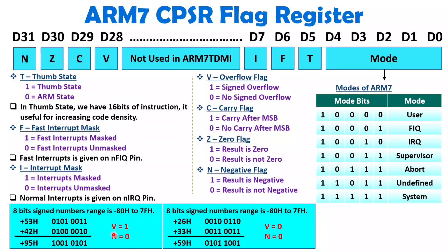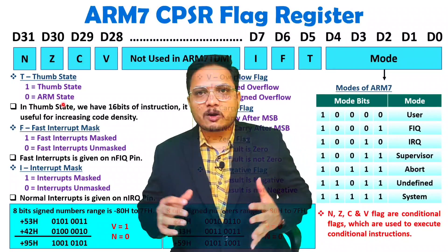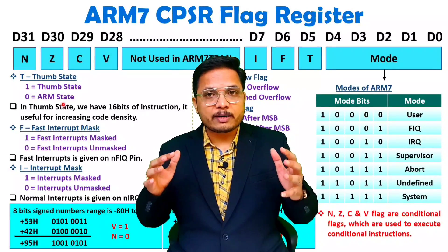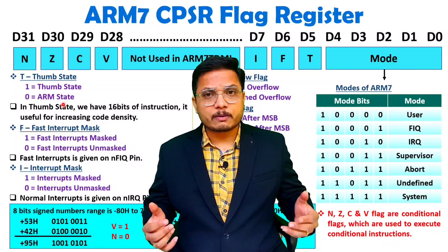By using the overflow (V), negative (N), zero (Z), and carry (C) flags, we can have conditional execution for all instructions. The NZCV flags are conditional flags used to execute conditional instructions, and almost all ARM7 instructions support conditional execution in ARM state. This is all about the CPSR flag register of ARM7. If you have any queries, please post in the comment box. Thank you for watching.